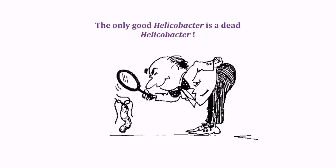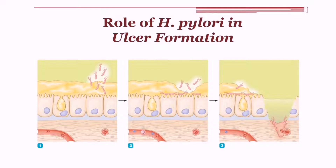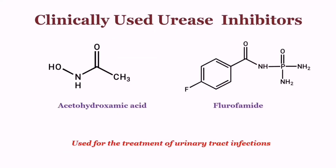We can say the only good helicobacter is a dead helicobacter. This is how H. pylori survives in the acidic environment of the stomach, as this picture depicts. And this is the role of H. pylori in ulcer formation — it invades into the stomach lining and can cause infection.